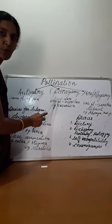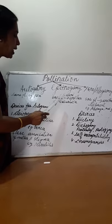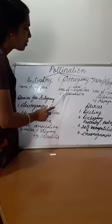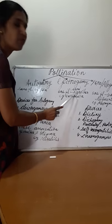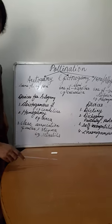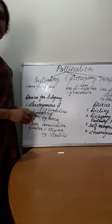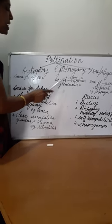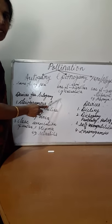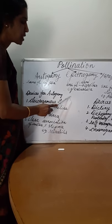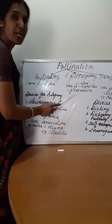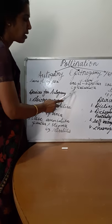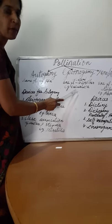The second one is geitonogamy. In geitonogamy, transfer of pollen grains takes place from one flower to another flower, but in the same plant itself. It is like cross pollination, but the genetic constitution is like autogamy. Example: Cucurbita.